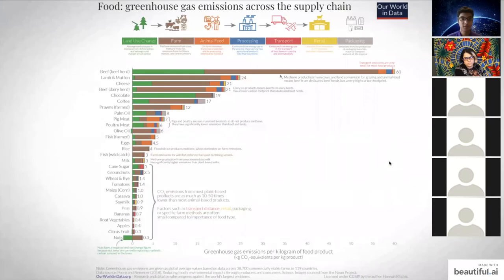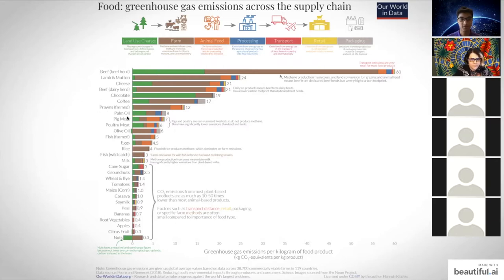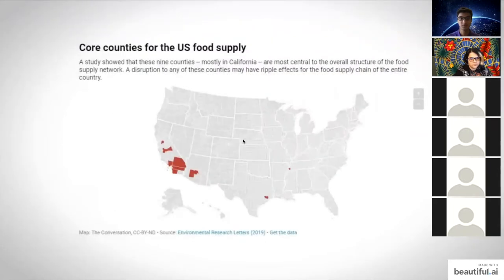Looking at greenhouse gas emissions across the food supply chain — land use, farm, animal feed, processing, transport, retail, and packaging — most emissions come from farming practices. The highest emitters are beef, lamb, and cheese. The way beef is currently produced using concentrated animal feeding operations generates large amounts of methane due to non-optimal diets. Compared to the highest emitters, vegetables, plant-based foods, fruits, and nuts produce roughly 10 to 15 times fewer emissions than beef, cheese, and lamb.